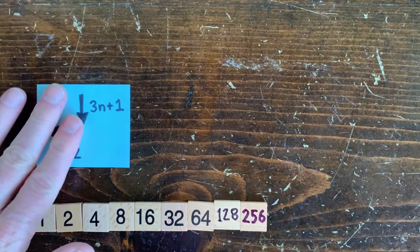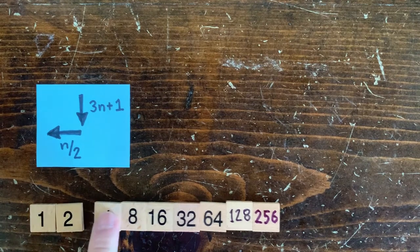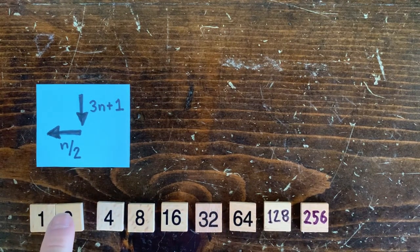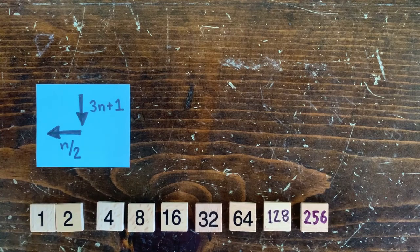We can start with every number of the form 2 to the n. They all go to 1. Now, powers of 2 thin out pretty quickly, so almost no numbers are powers of 2.